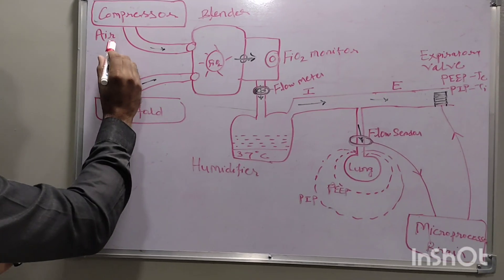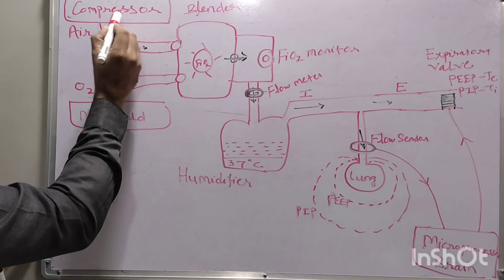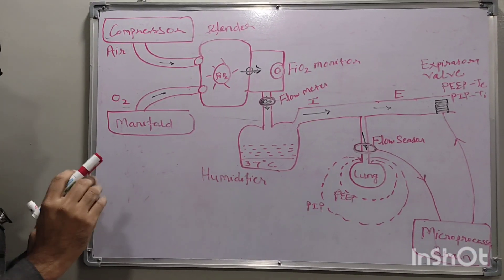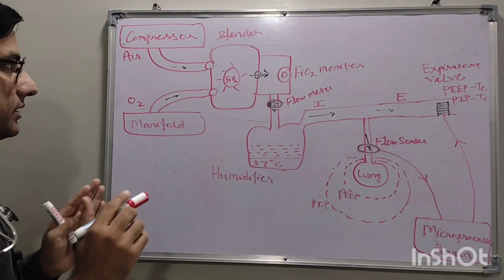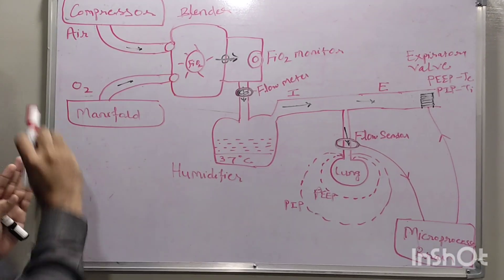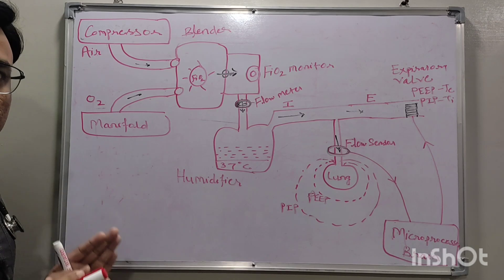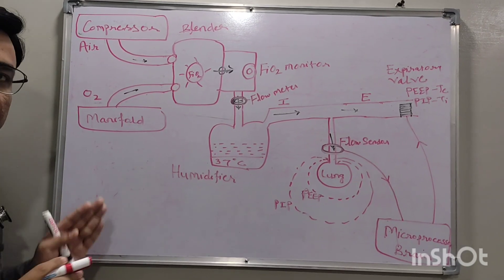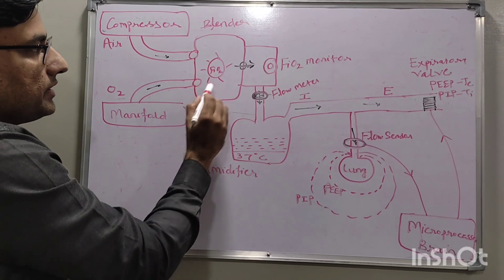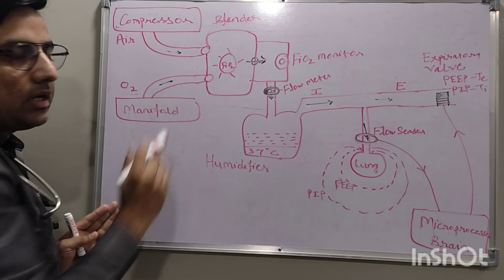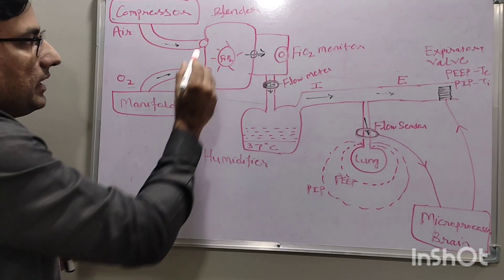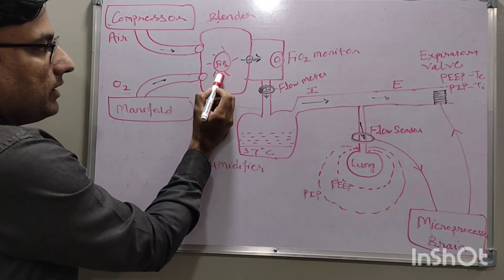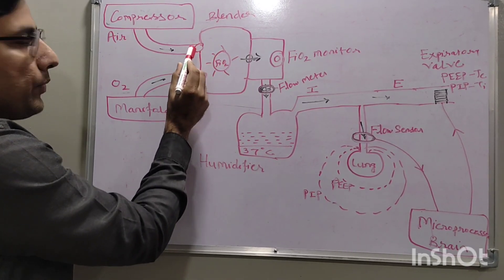For any ventilator we need an air and oxygen source. For the air source there will be an air compressor that delivers air at high pressure, and the oxygen source — an oxygen cylinder manifold — delivers oxygen at high pressure. Air and oxygen at high pressure go through the center lines to the NICU, to the air point and oxygen points. We then connect the air and oxygen tubings of the ventilator to those points, and the air and oxygen go inside the ventilator from behind. Inside the ventilator there is a blender that mixes the air and oxygen.